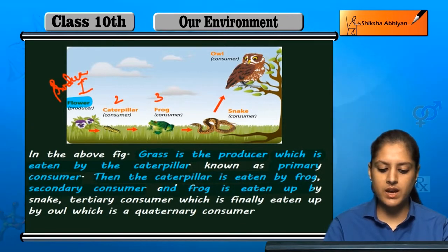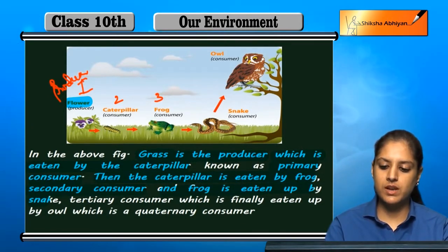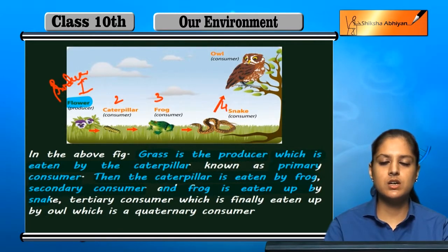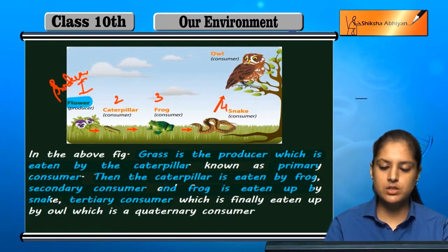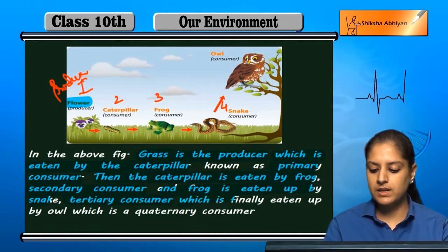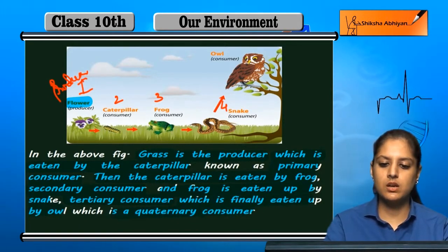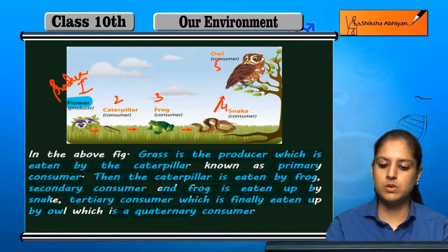The frog is then eaten by a snake, making the snake the tertiary consumer at the fourth level. Finally, the owl has eaten the snake, making the owl the quaternary consumer.